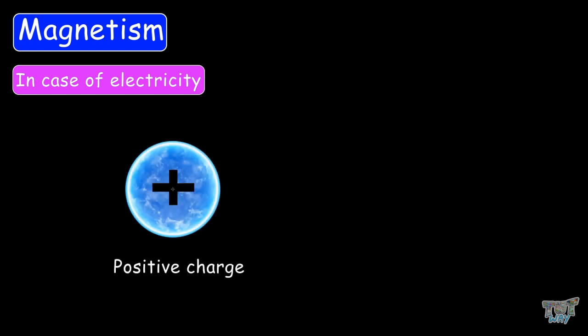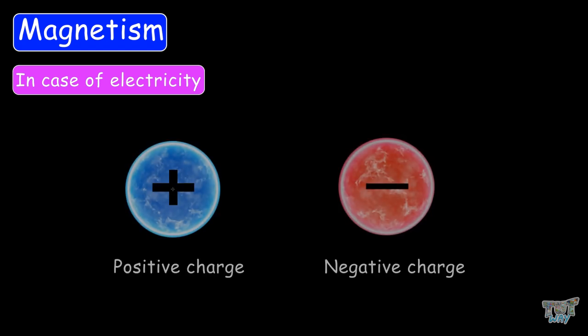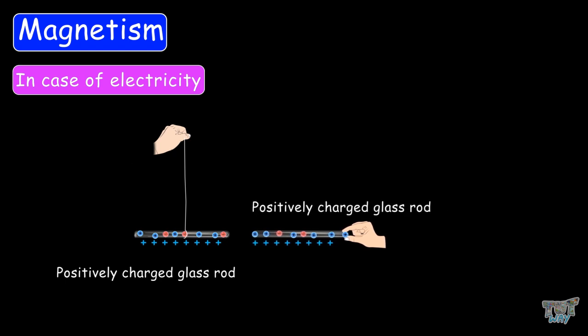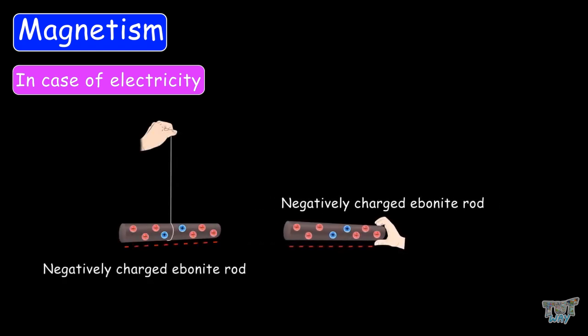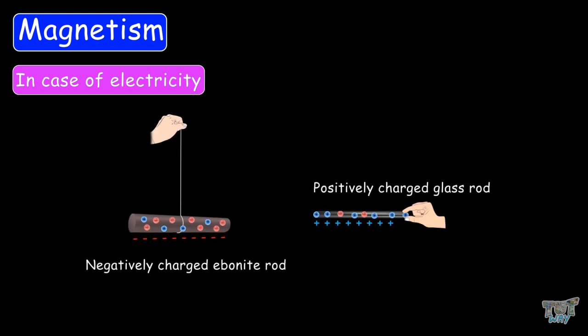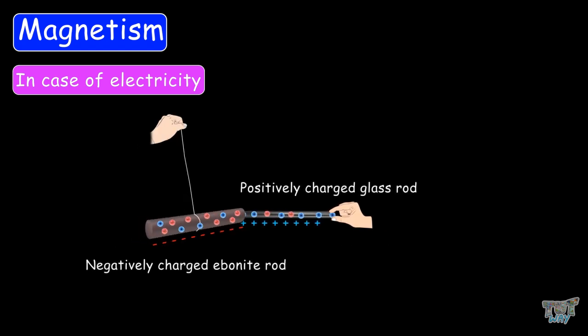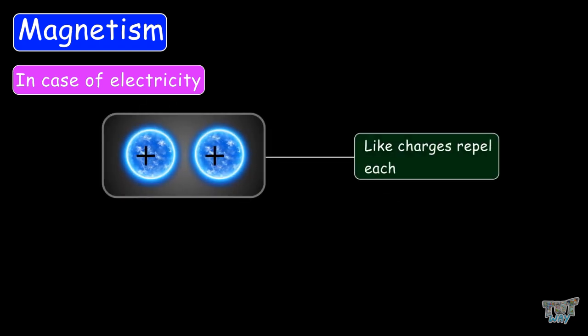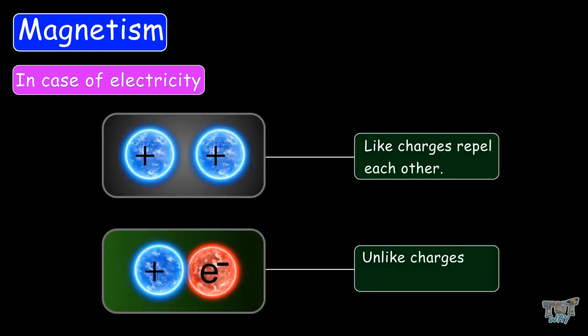In the case of electricity, we have two types of charges: positive charge and negative charge. When we bring a positive charge near another positively charged object, they repel each other. When we bring a negative charge near another negatively charged object, they also repel each other. When we bring a positive charge near a negative charge, they attract each other. That means like charges repel and unlike charges attract.